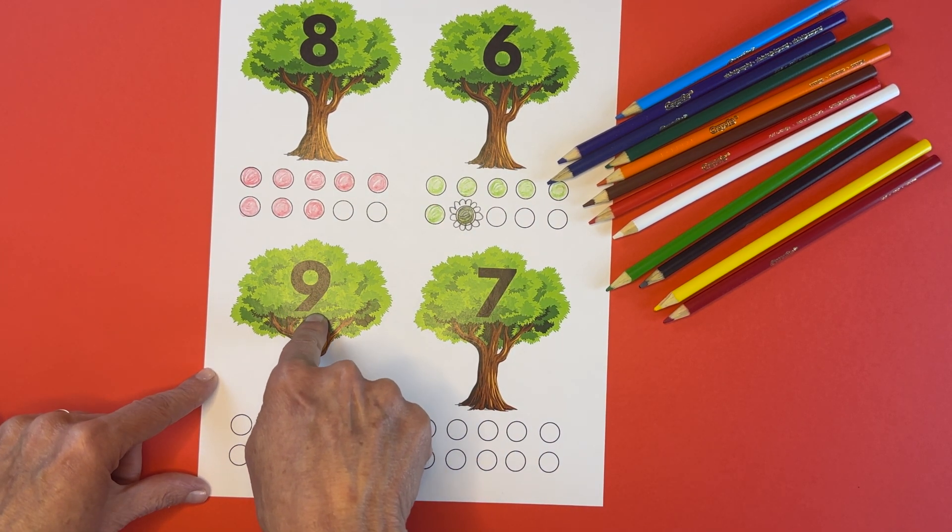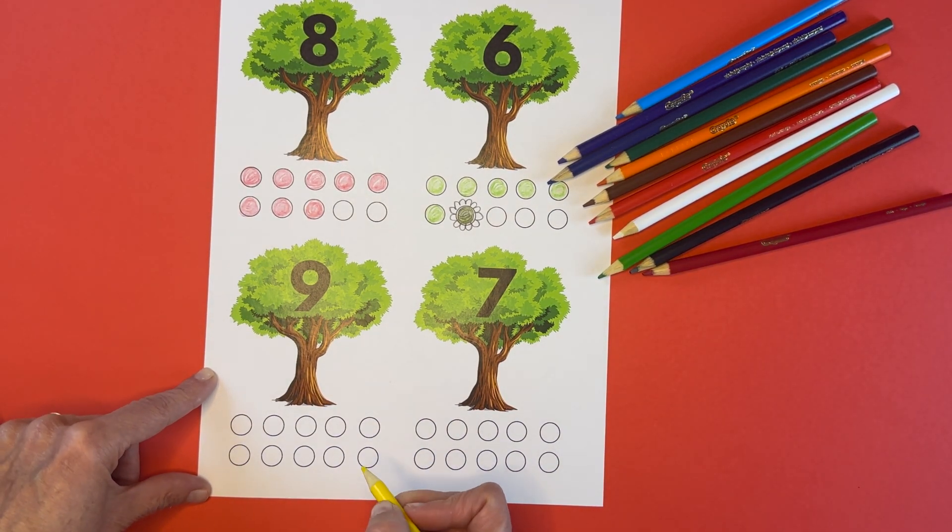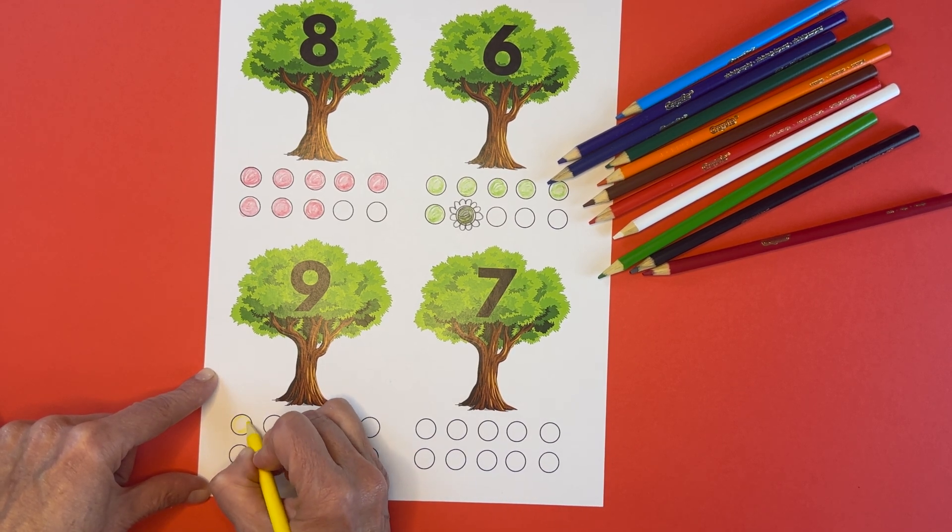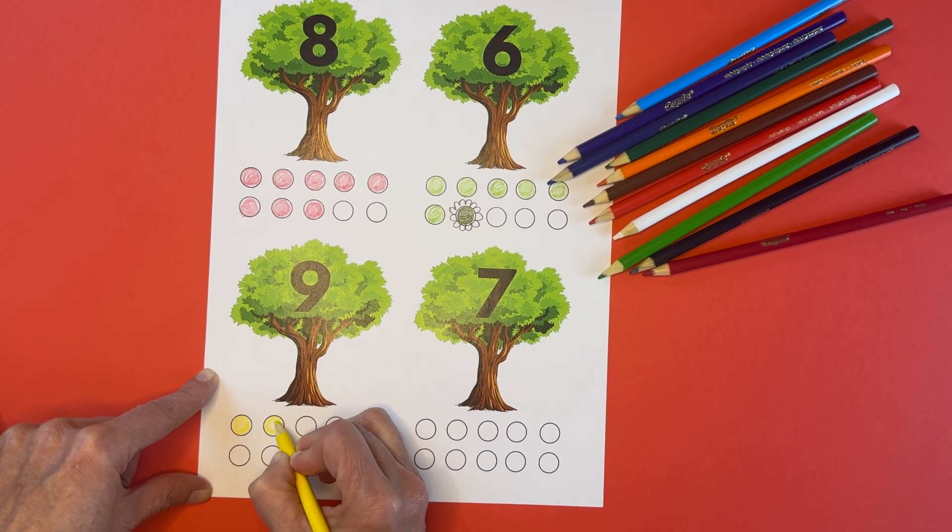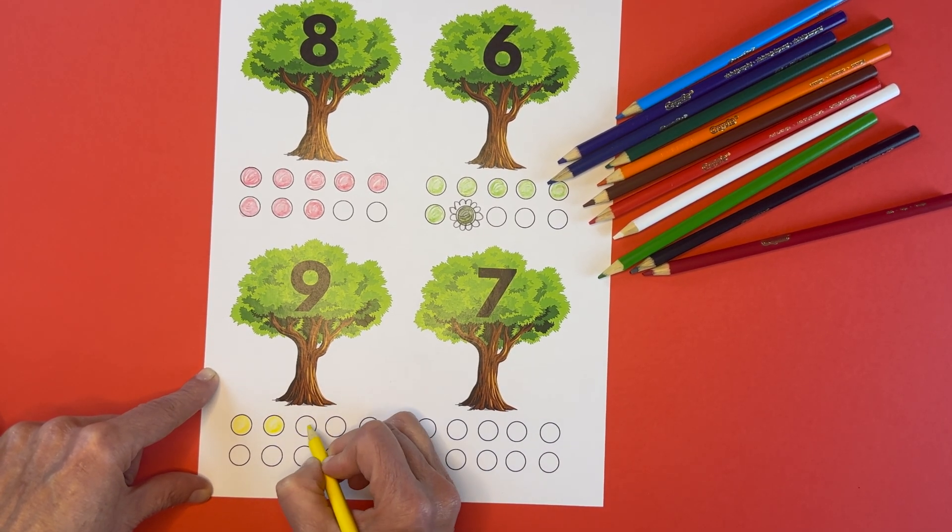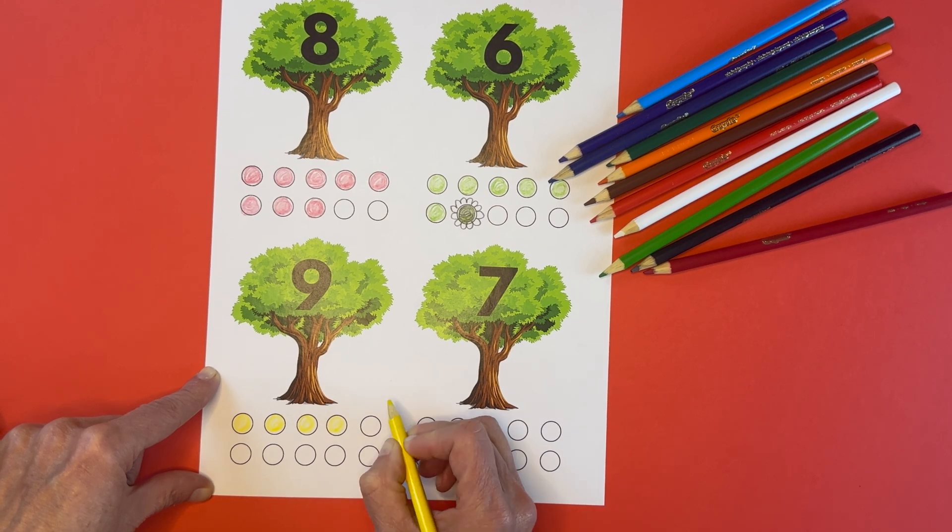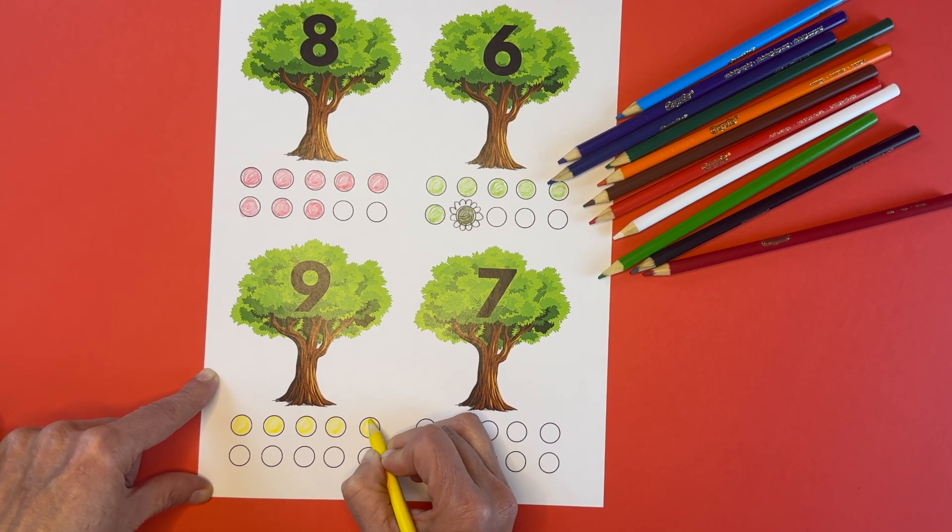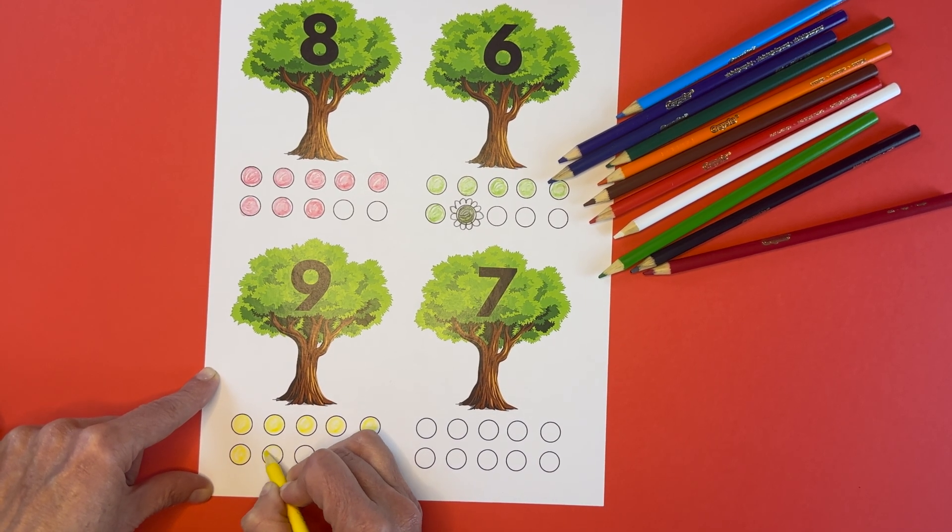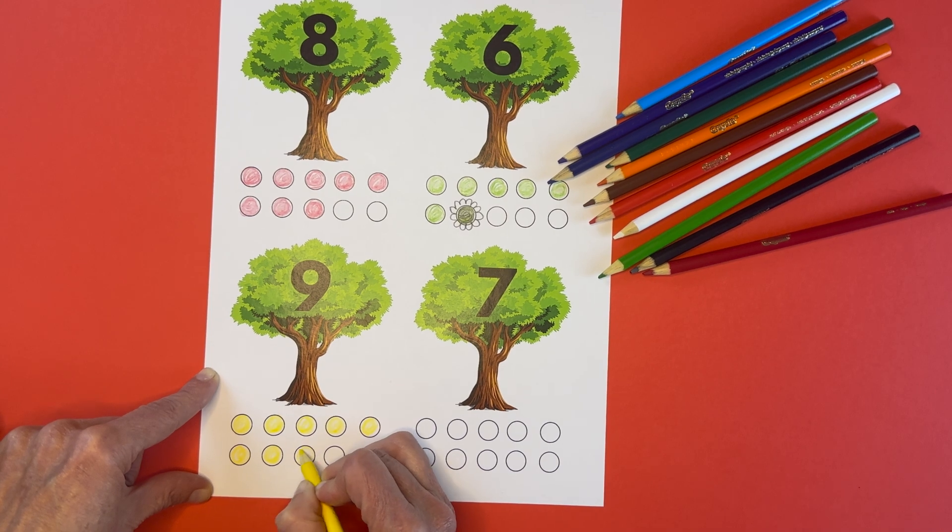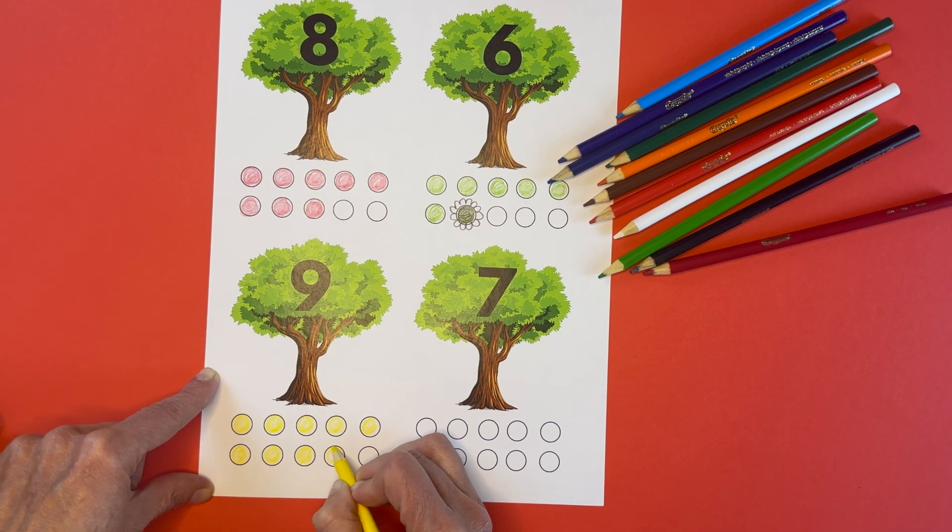Now the number nine. Oh, let's take the yellow one. Let's do nine apples under the number nine tree. Here's one, two. Now you watch closely. Make sure I stop. Three, four, five, six, seven, eight. Oh, thank you for reminding me. Just one more. And nine.